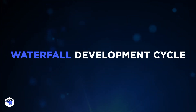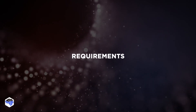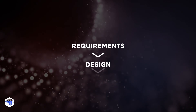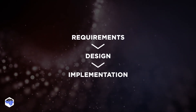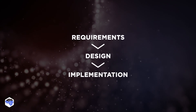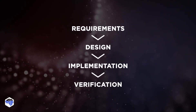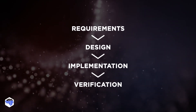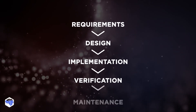The usual development stages of the Waterfall model are: Stage 1 — Requirements, gathered at the very beginning of the project. Stage 2 — Design. Stage 3 — Implementation, where developers create the actual code based on the specifications formulated at the beginning. Stage 4 — Verification, where customers can review the completed product and determine whether it meets their initial requirements. Stage 5 — Maintenance.